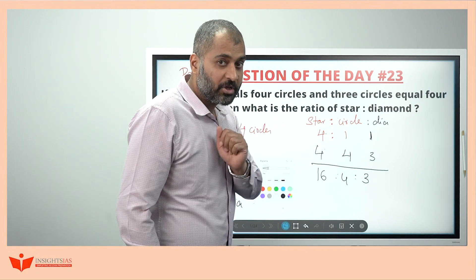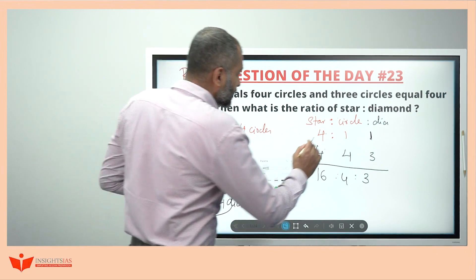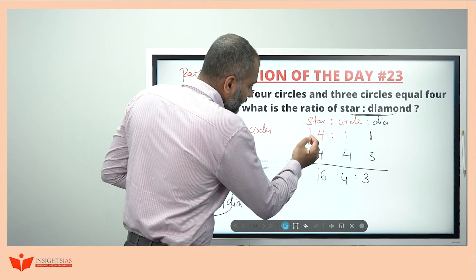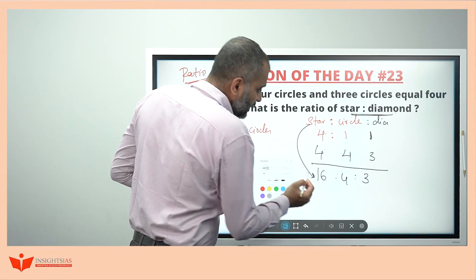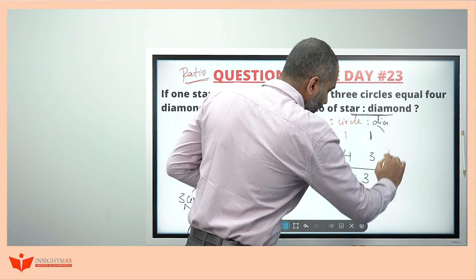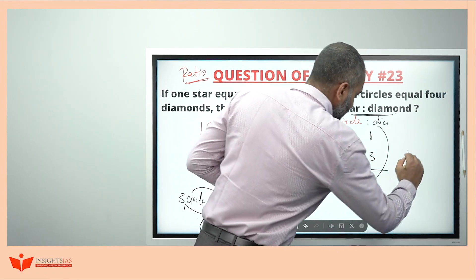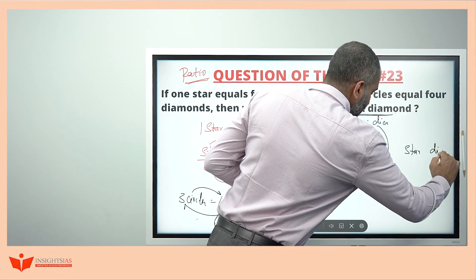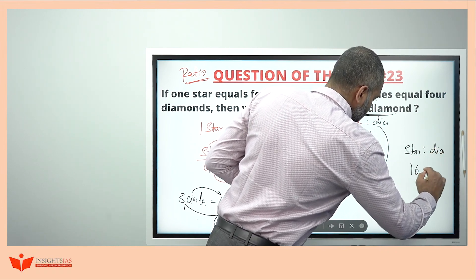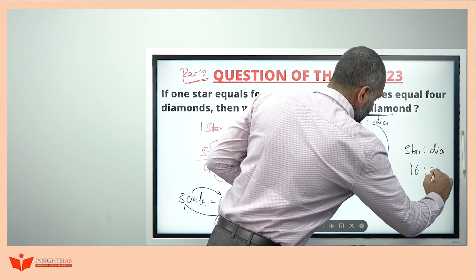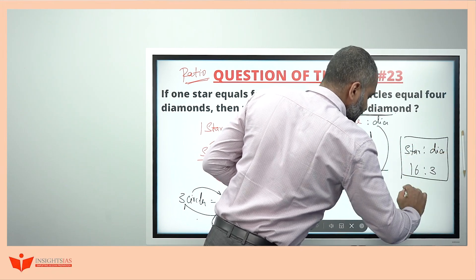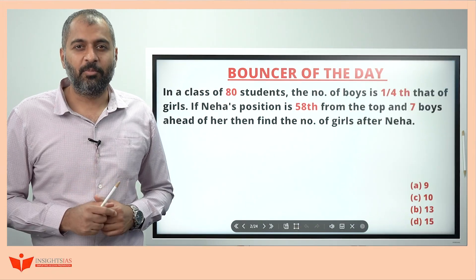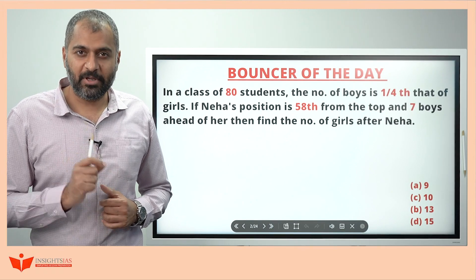But the question asks only for star to diamond. Star is sixteen, diamond is three. So star to diamond is nothing but sixteen to three. This is our required answer. This is the bouncer of the previous video.